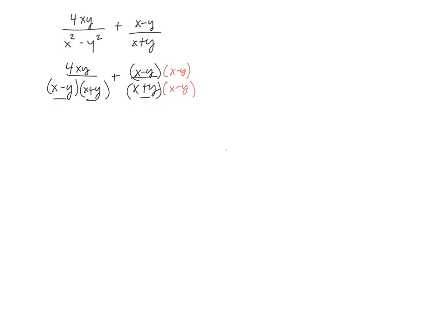Okay, now I've got a common denominator. Each denominator's got x plus y, x minus y. So I can write one denominator, x plus y, x minus y. And then just write what I have left up top. So I have 4xy plus, and let's foil this through.